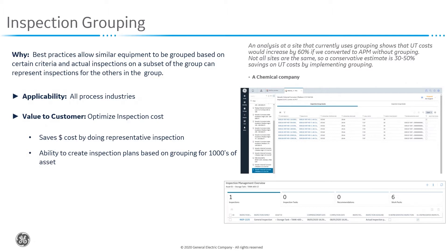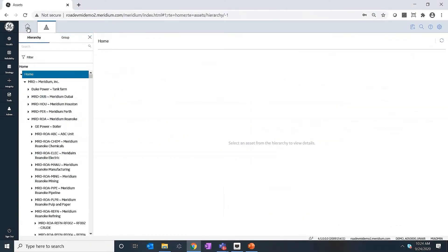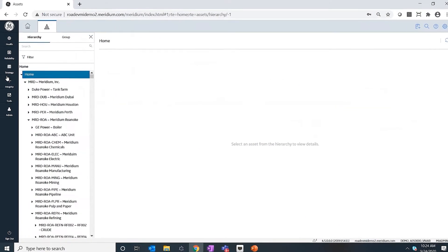We worked with multiple customers on this feature, and one of the customer insights was that by implementing inspection grouping, they estimate to save about 30 to 50 percent on their ultrasonic testing cost. So let's get into the application to talk about this feature.